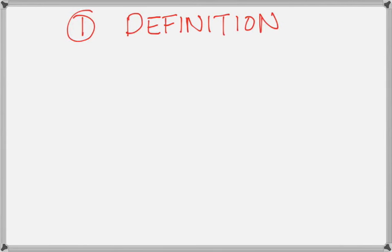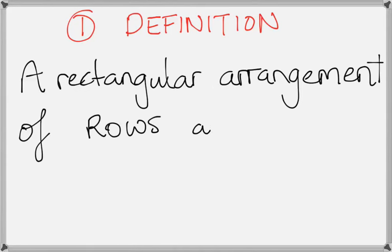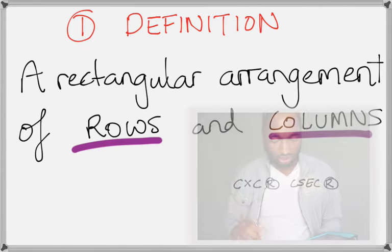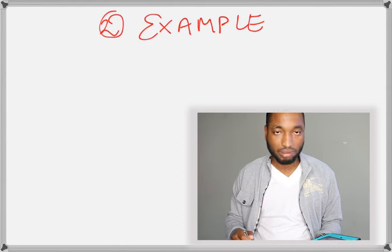First thing you need to know on matrices, definition of a matrix. And the definition of a matrix, according to CXC CSEC, is a rectangular arrangement of rows and columns. Keyword, rows and columns. Those two keywords are going to follow right through matrices, so pay attention to them. Rows, columns.